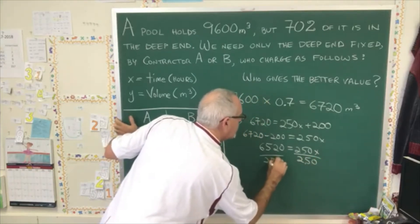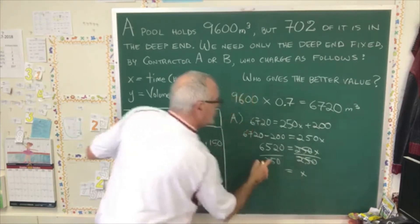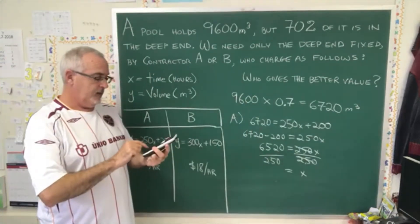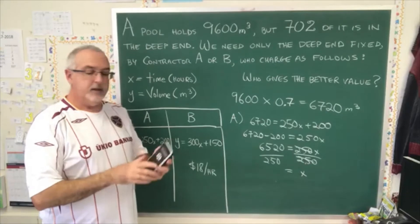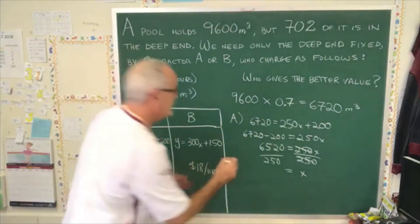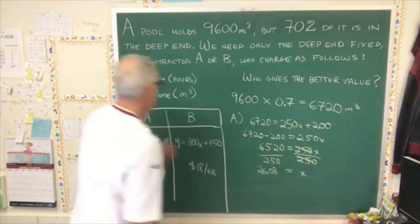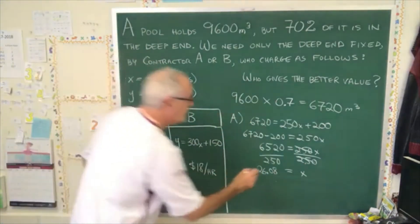In order to isolate our variable, these cancel, and x is equal to 6520 divided by 250, which equals 26.08. And that is an x, it's hours, the unit of measure.